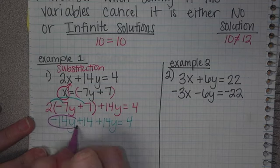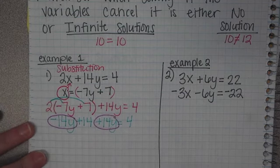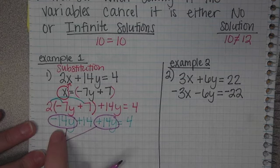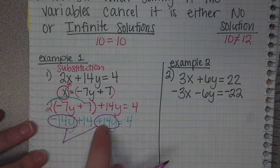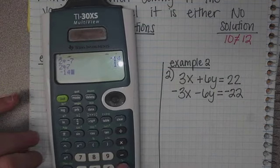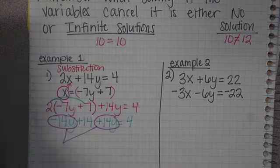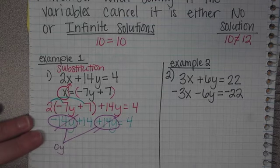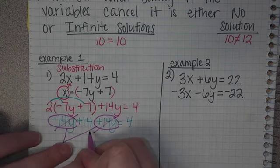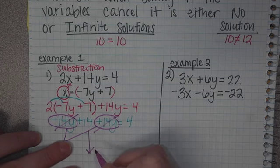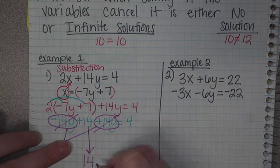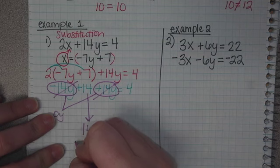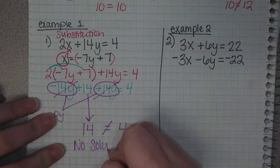Circle your variables. That's what we're trying to get by themselves. We're going to combine them. If we notice, negative 14 plus 14 cancels and is 0. Bring down what you're left with. We're left with 14 equals 4. Well, 14 does not equal 4, so then you would just say no solution.